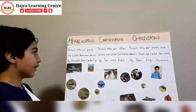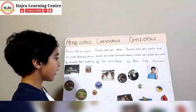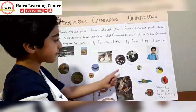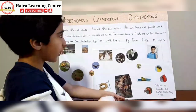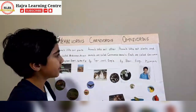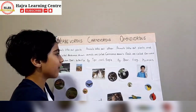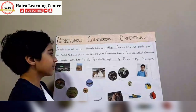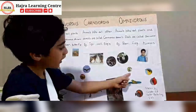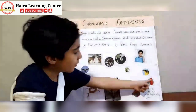Carnivores are animals who eat other animals. For example, wolf, eagle, snake, fox, tiger. Omnivores are animals who eat both plants and animals. For example, panda, human, hamster, frog, and a few birds.